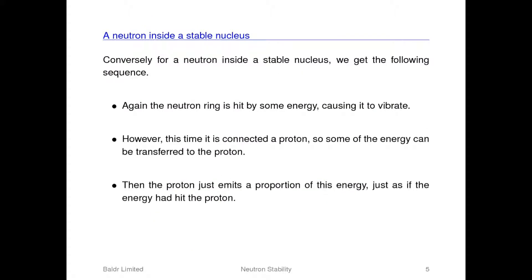Conversely, if a neutron is located inside a nucleus then it is directly connected to other protons or neutrons. Hence in this situation when a neutron is hit by some energy it can transfer some of that energy through its superposition points, i.e. where it connects to its neighbouring protons or neutrons. When the energy ends up in a proton some of it is then emitted by the proton through its hole stabilizing the neutrons within the nucleus.